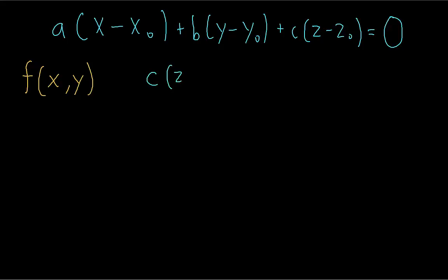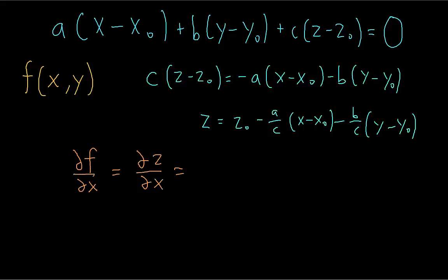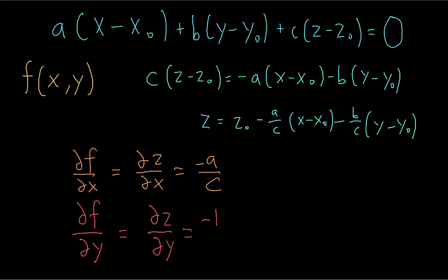We can rearrange for z, and now the question is: what are the coefficients a, b, and c that will give us a tangent plane? Remember that a tangent line to a curve has the same derivative at that point. It makes sense that this tangent plane should have the same partial derivatives as the function at the point x₀, y₀, z₀. The partial derivative of the tangent plane with respect to x is −a/c, which equals the partial derivative of the function with respect to x. Similarly, the partial derivative with respect to y is −b/c, equal to the partial derivative of the function with respect to y.